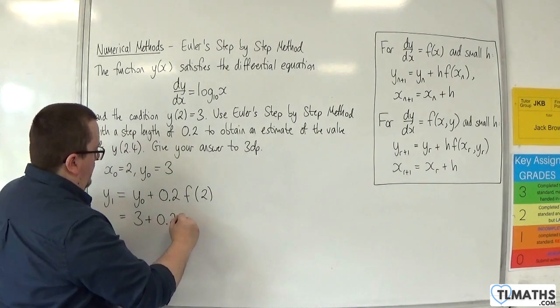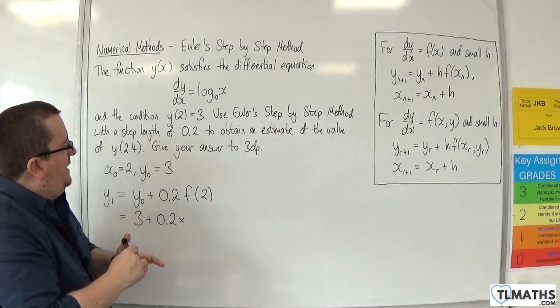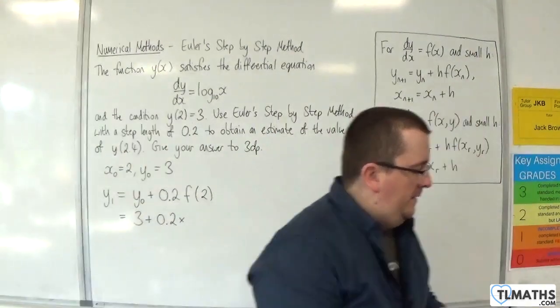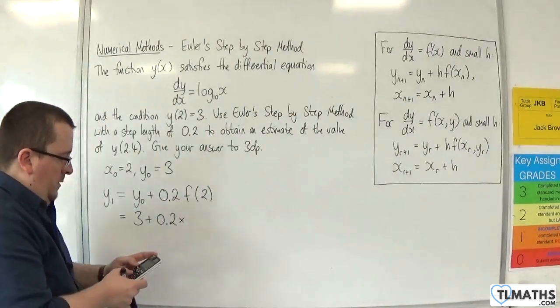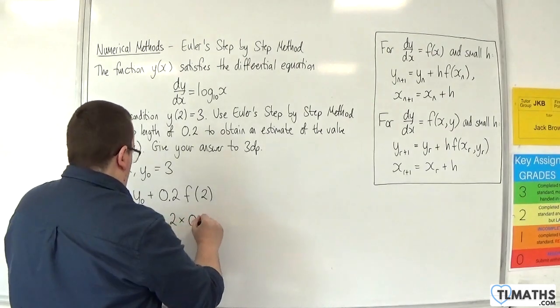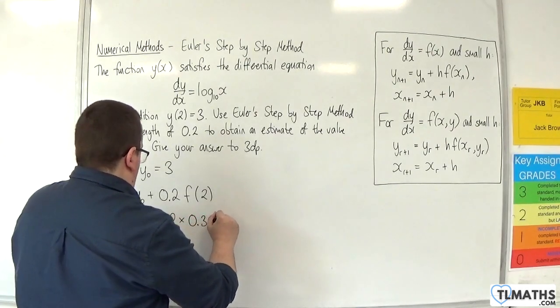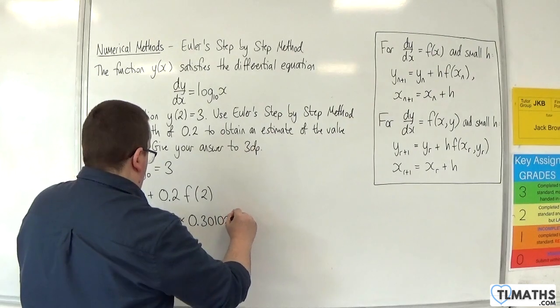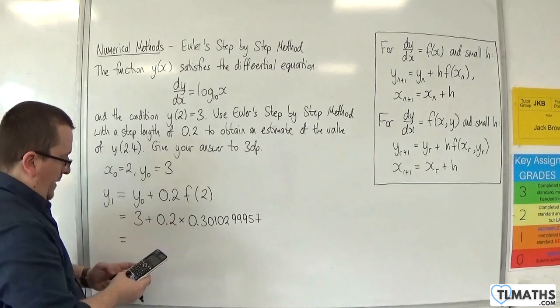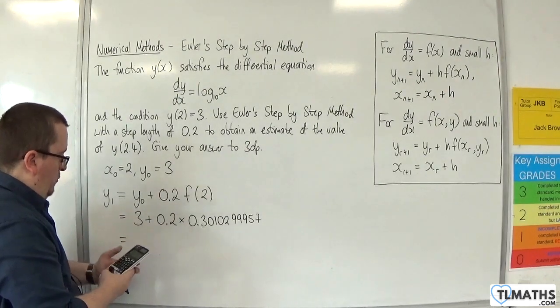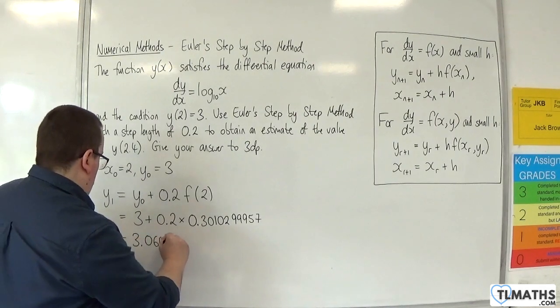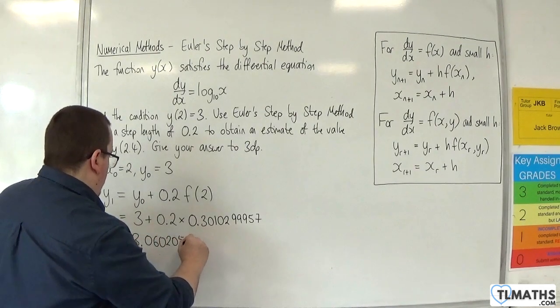So y0 is 3. Now I need to substitute 2 into here. So that is log base 10 of 2, which is 0.3010299957. So I'm multiplying that by 0.2 and adding 3, and we get 3.060205999.